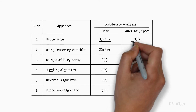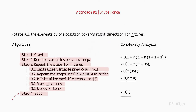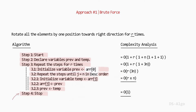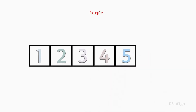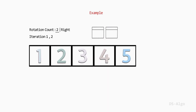This is how the time complexity and auxiliary space of the brute force approach is calculated. For right rotation, the algorithm changes such that we initialize variable prev with the first element and repeat the steps until j equals n in descending order. For example, let an array be 1, 2, 3, 4, 5 and we have to rotate this array by 2 positions towards the right direction. We will iterate the array 2 times and rotate using temporary variables prev and temp.